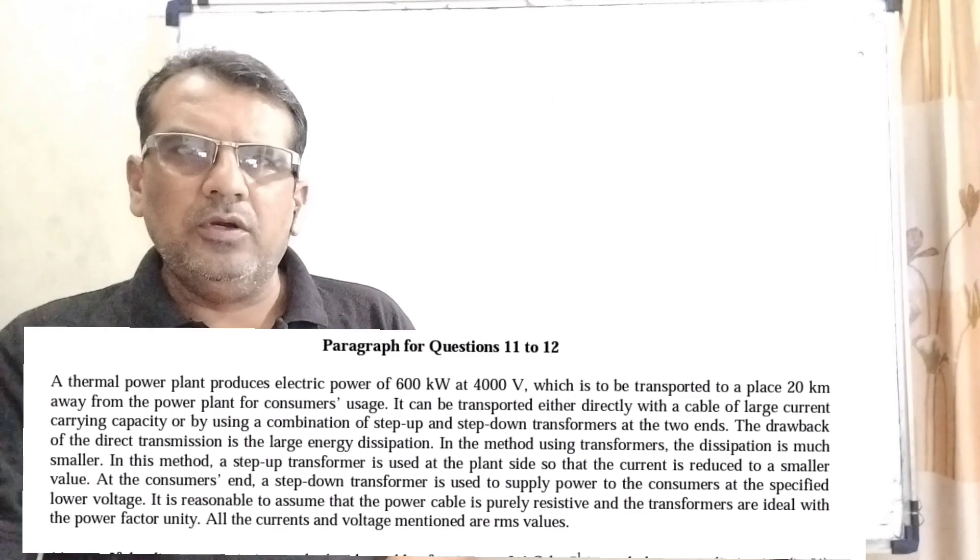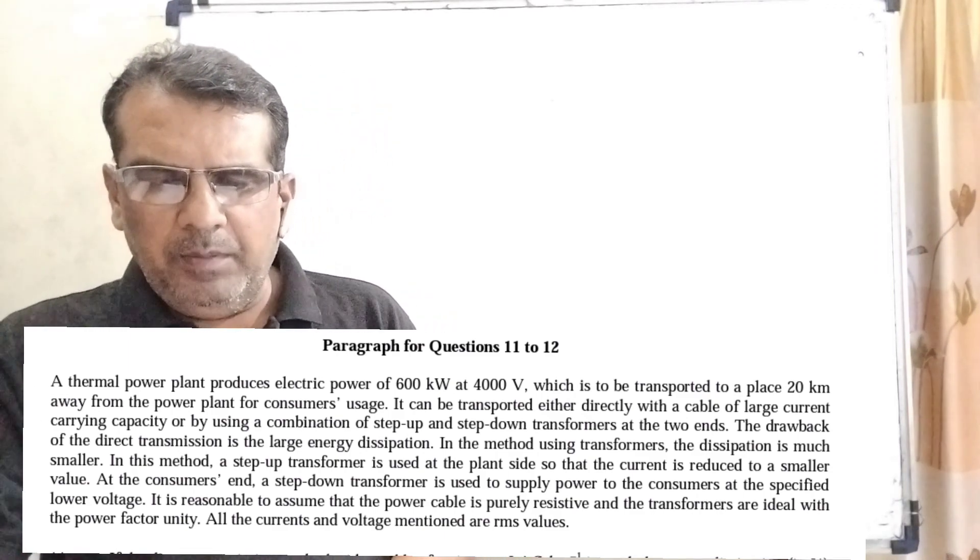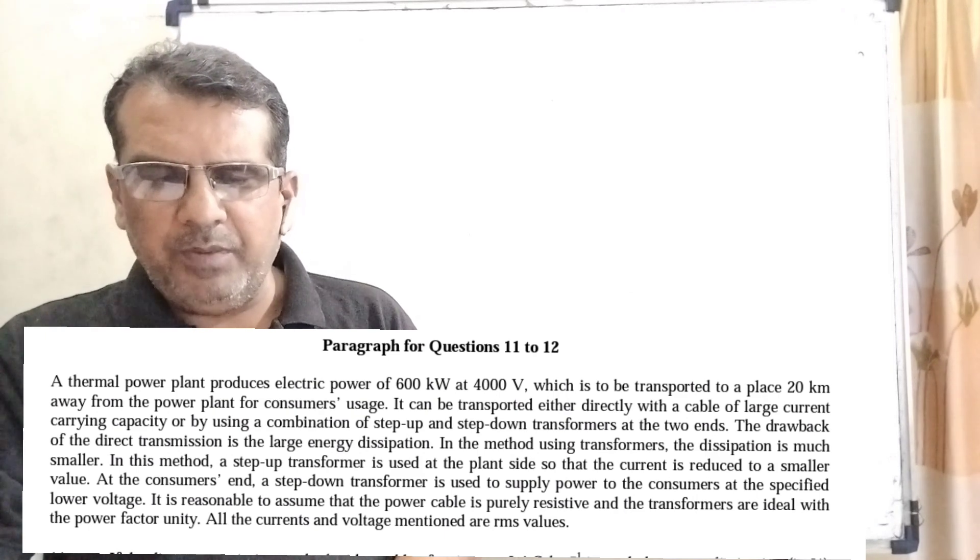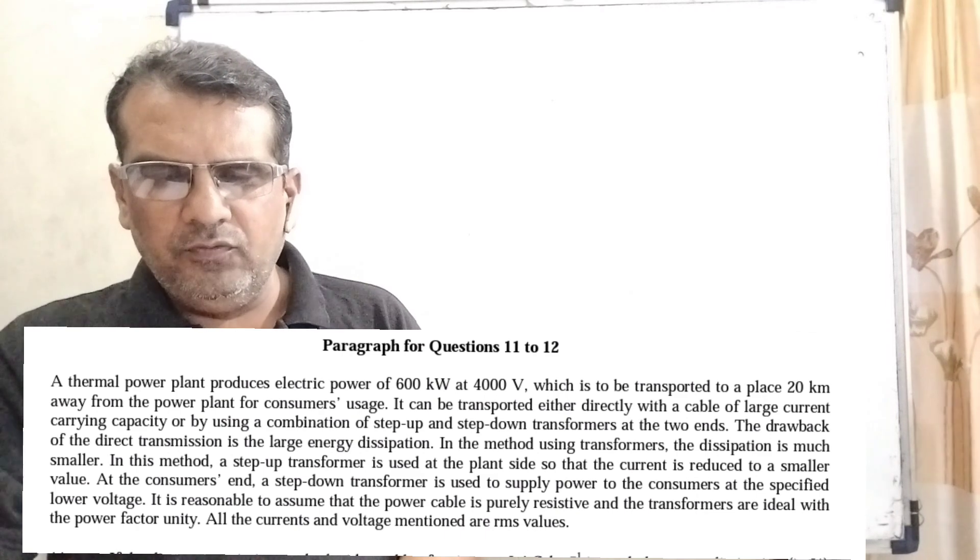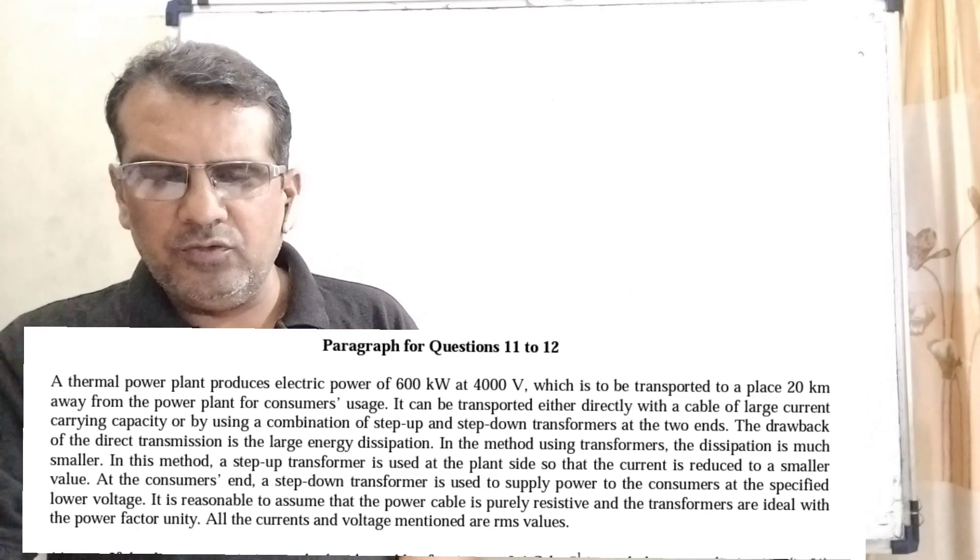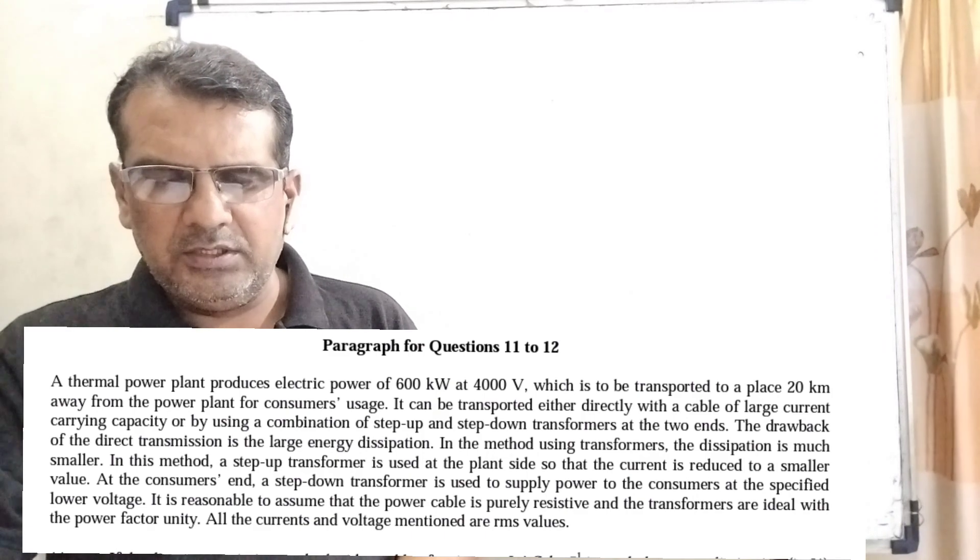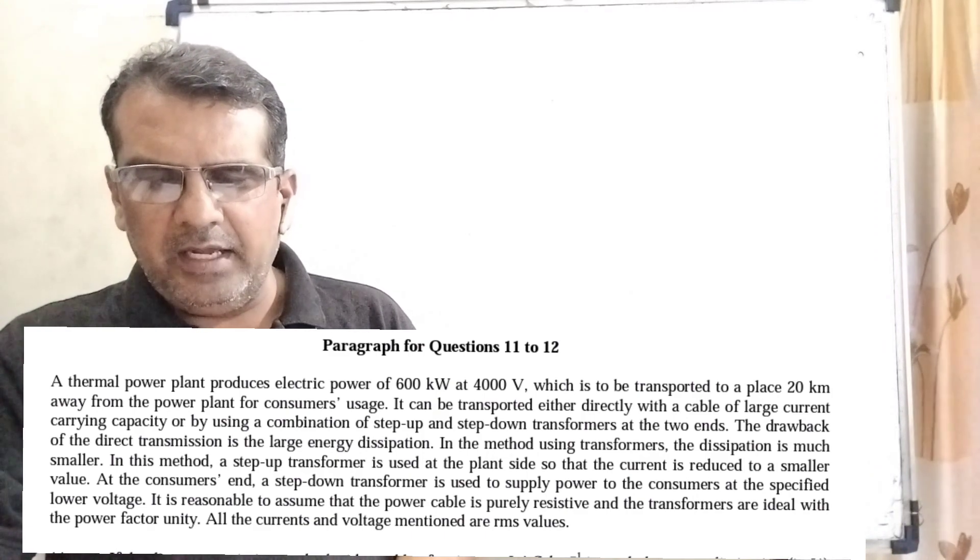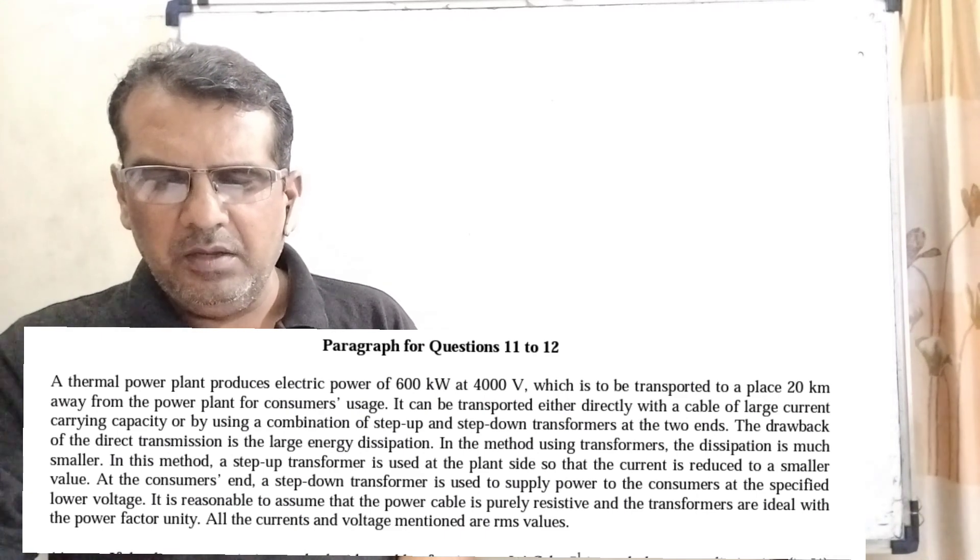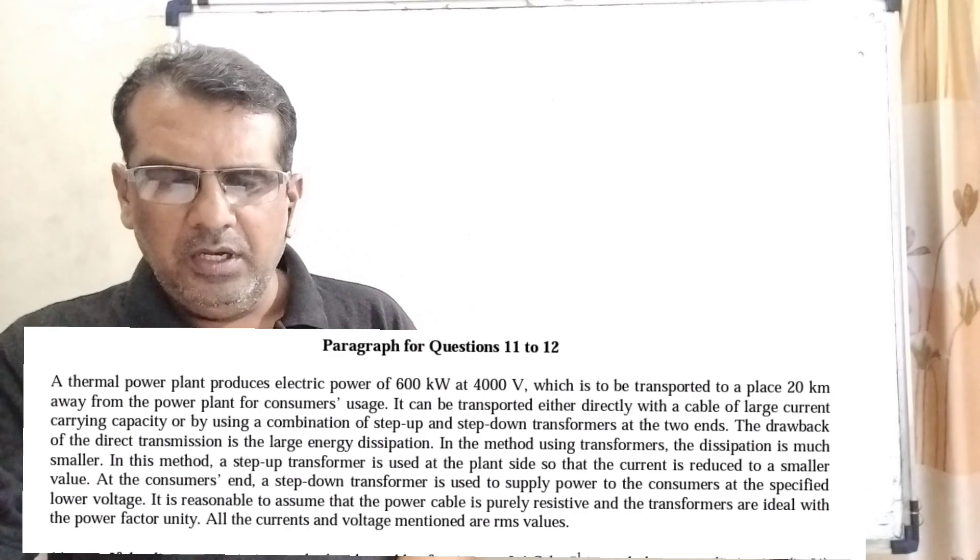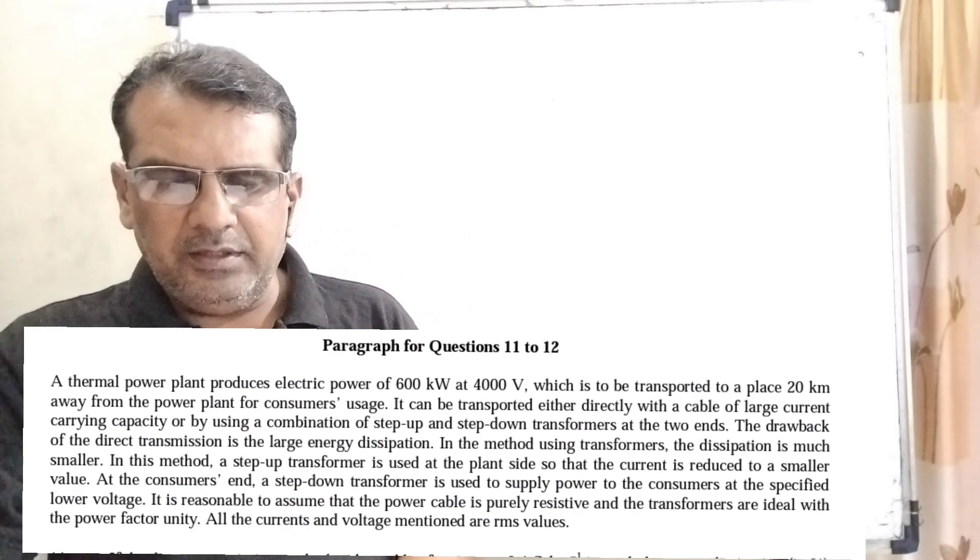Now here is the question based on comprehension means paragraph questions. A thermal power plant produces electric power of 600 kilowatt at 4000 volt, which is to be transported to a place 20 kilometer away from the power plant for consumers uses. It can be transported either directly with a cable of large current carrying capacity or by using a combination of step up and step down transformers at the two ends.